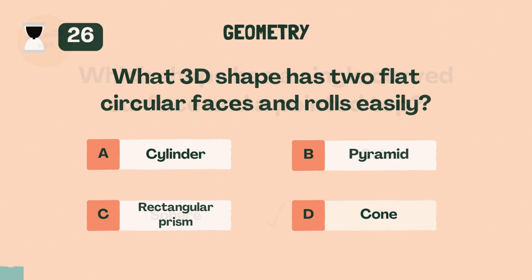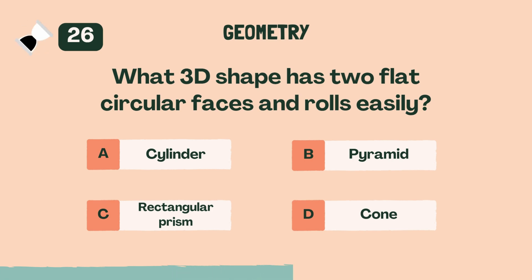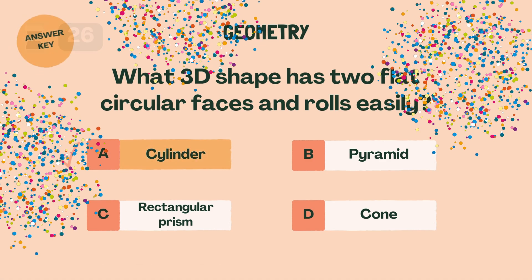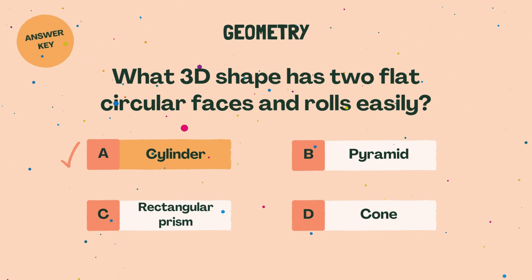What three-dimensional shape has two flat circular faces and rolls easily? A. Cylinder.